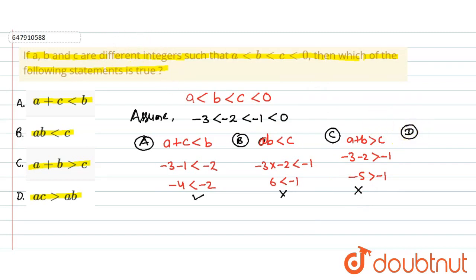Now let's discuss option D. Option D says AC greater than AB. So minus 3 into C minus 1 greater than minus 3 into minus 2. Then 3 greater than 6, which is also not possible. Clear? It means option A is the right answer. Thank you.